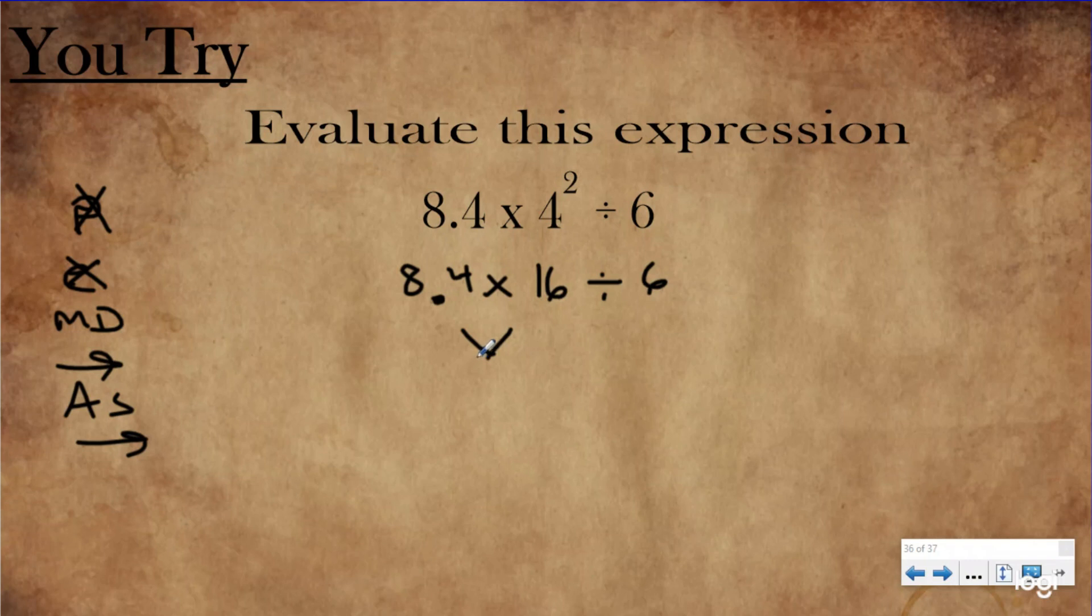When I go from left to right, I need to solve 8.4 times 16. If you're struggling with multiplying decimals, check out our decimal song up here as a reminder, or check out our multiplying decimal lessons. But because this isn't a multiplying decimal lesson, I'll go ahead and tell you: 8.4 times 16 is 134.4, and then I need to rewrite my divided by 6.